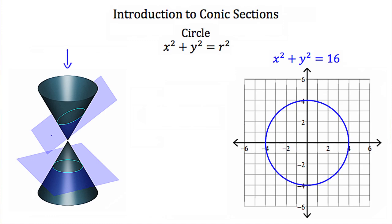So if I was looking straight on this plane and I saw my circle, I could imagine a coordinate axis on that circle. Then if I took that coordinate axis and that circle and drew it on a graph, it would look something like this. Here we have the graph of a circle and the equation of this circle is x squared plus y squared is equal to 16. This circle has its center at the origin, and the equation of every circle with its center at the origin can be written in standard form: x squared plus y squared is equal to r squared, where r is the radius.